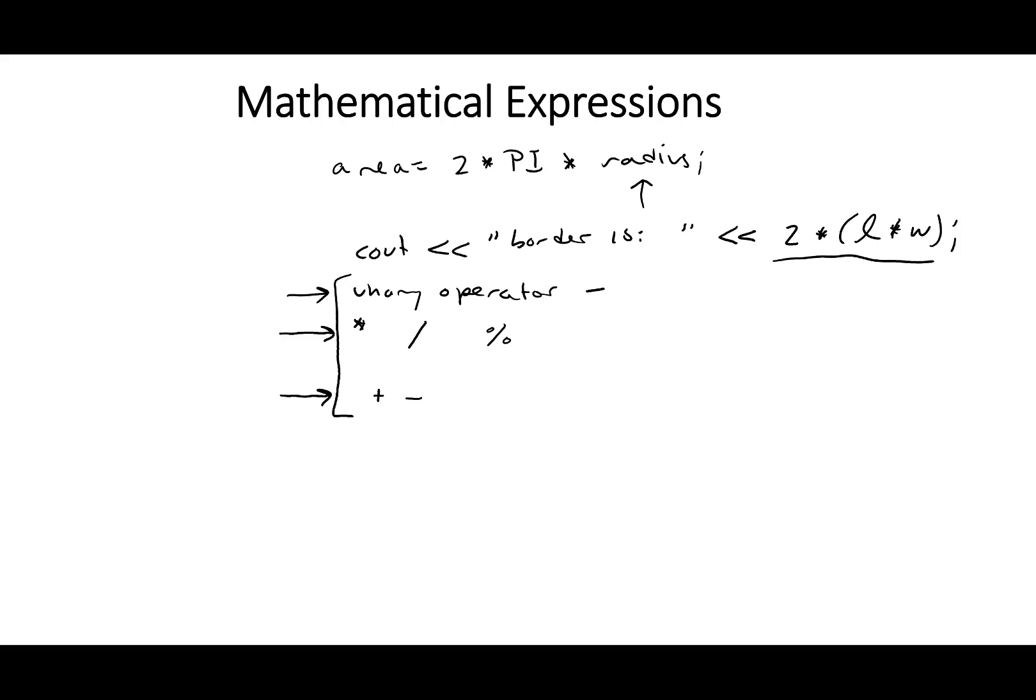And so what that means is if we have, let's say we have 12 plus 6 divided by 3, the divide operator has a higher precedence than the plus, and so it's going to calculate the 6 divided by 3 first, so it's going to calculate 2 plus 12, and then it's going to calculate the 12 plus 2 last.